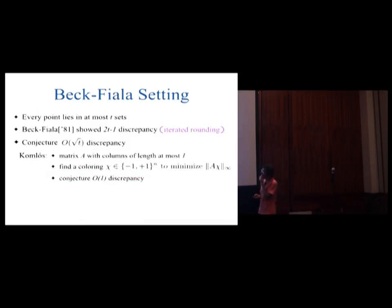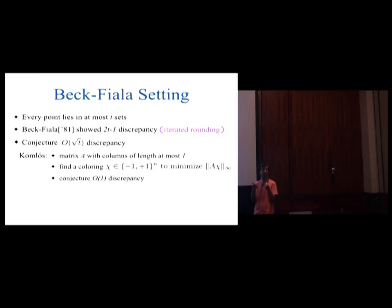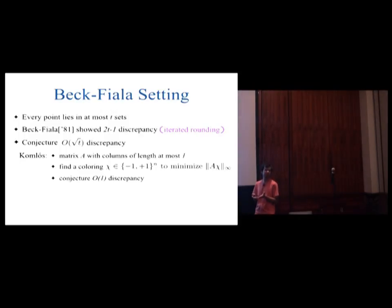A generalization of the Beck-Fiala conjecture is the Komlós conjecture. Here we have an arbitrary matrix A such that each column is a vector of L2 length at most 1. You want to colour each column minus 1 or plus 1 such that if you multiply each column by its colour and add all these vectors up, the L-infinity norm of the resulting vector is as small as possible. The Komlós conjecture says you can make this L-infinity norm order one.